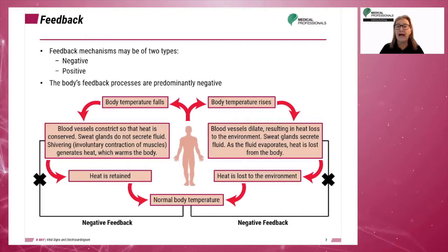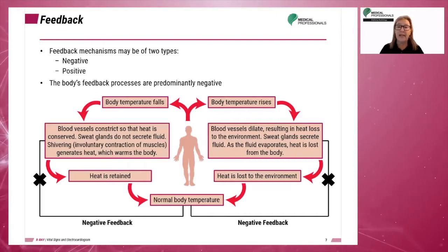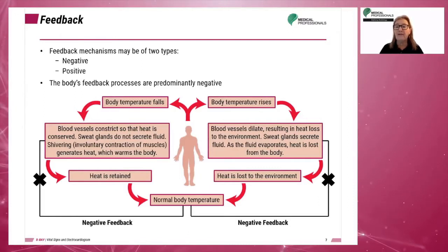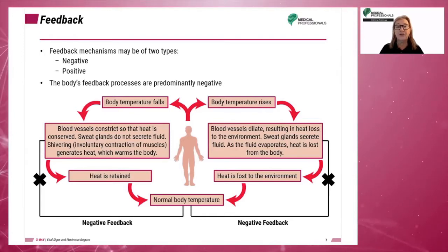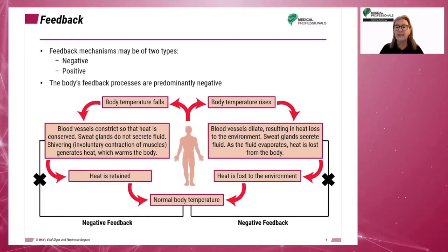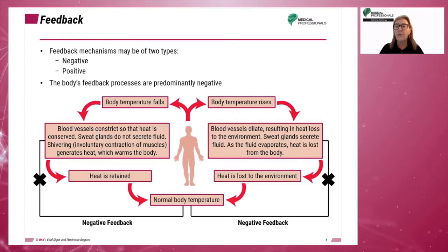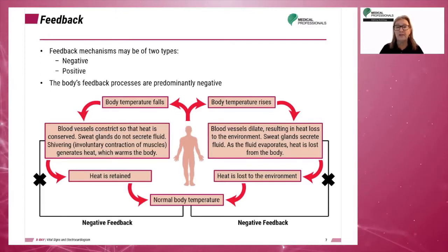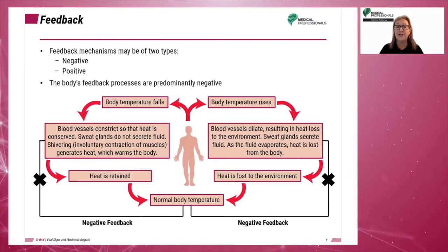The body's feedback processes are predominantly negative. Examples of negative feedback are blood pressure, the regulation of blood sugar, blood pH, blood gases, fluid balance, and erythropoiesis, which is the development of red blood cells to maintain sufficient oxygen delivery to tissues.